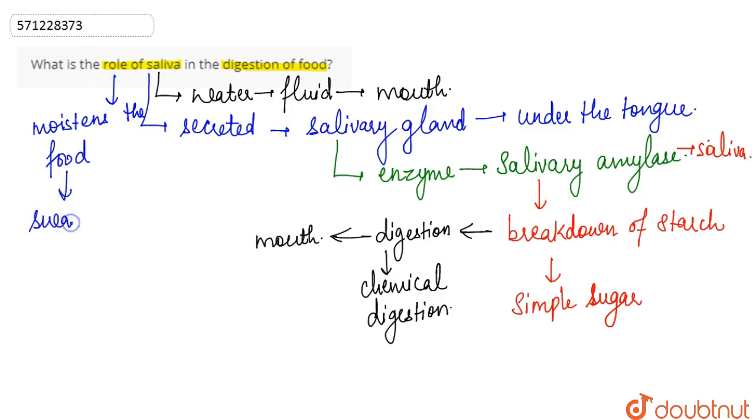Or it makes it easy for us to swallow. So basically swallowing becomes easy because the food gets moistened, so it is easily masticated and can be swallowed easily. So this is the complete role of saliva in the digestion of food.